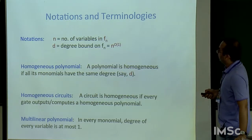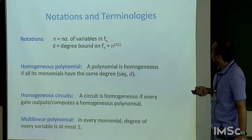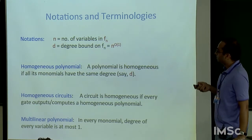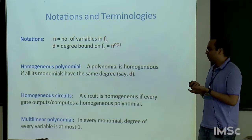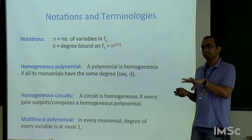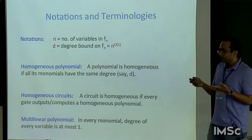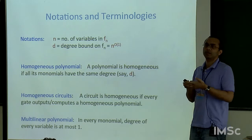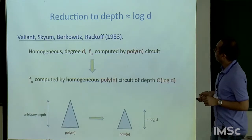A few notations: N is the number of variables, D is the degree of the polynomial F_N, and throughout the talk D is always bounded by poly(N). A homogeneous polynomial has all monomials of the same degree D. A homogeneous circuit is one where every gate computes a homogeneous polynomial. A multilinear polynomial has every variable appearing with degree at most one in every monomial. Similarly, one can define multilinear circuits.